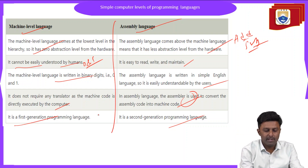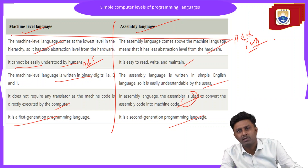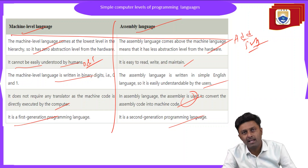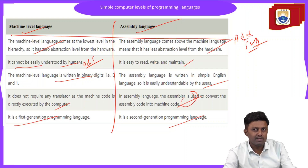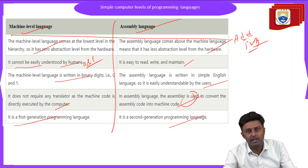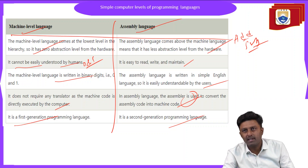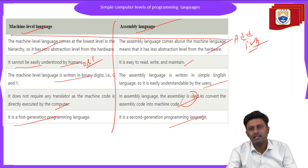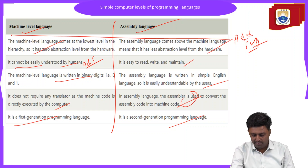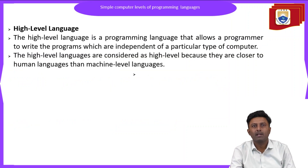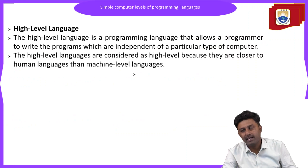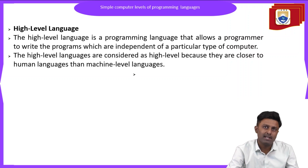These are the main differences between machine level language and assembly language. In machine level language, the code is written in 0s and 1s, which is very difficult to identify, write, understand, and debug errors, and it is not compatible. Whereas in assembly language we use English words like ADD and SUBTRACT, and we use an assembler to convert assembly language into machine level language. We have now seen the two types of low level languages: machine level language and assembly language.